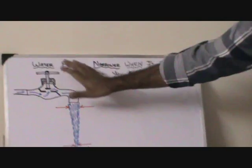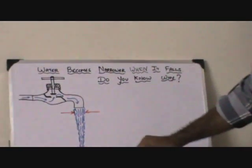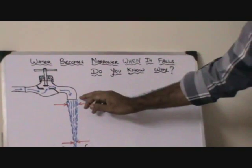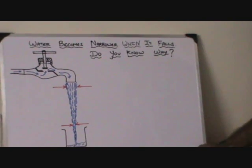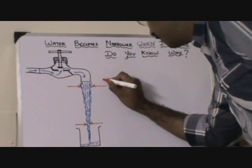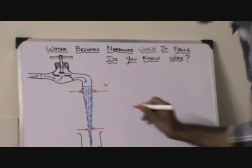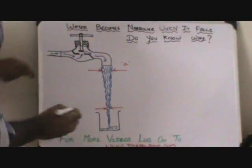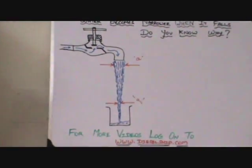This is the water tap. Let's assume this is the water tap and this is the direction of the water flow — water flowing from the tap into, let's say, some beaker. The area at this point is, let's assume, A. The area at this lower point is A1.